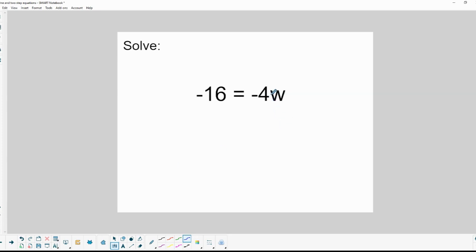Okay, in this case we're multiplying w by negative 4. So if I divide by negative 4, 16 divided by negative 4 is negative 4. Negative 4 divided by negative 4 is 1. So 4 equals w. And there you go.